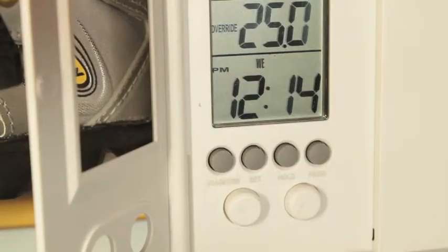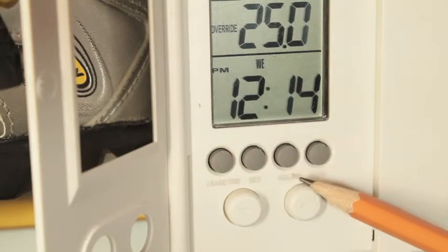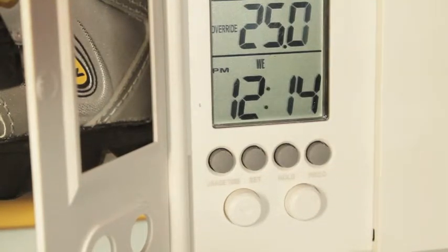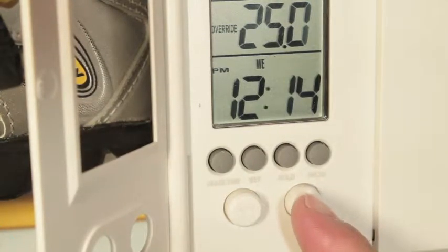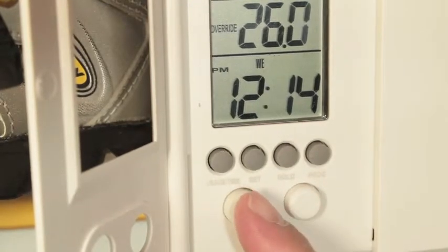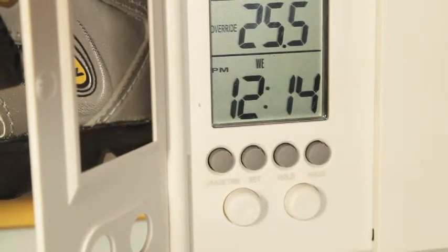Below the screen, there's a row of buttons labeled usage time, set, hold, and prog. The function of these buttons will be explained as we go along. Below them are two buttons with arrows, marked up and down respectively. These buttons can change the set temperature at any time.